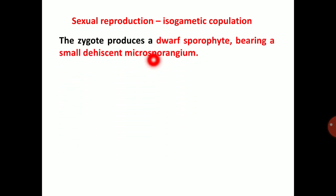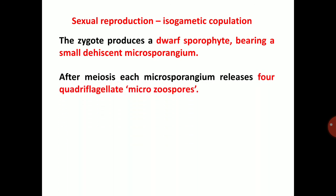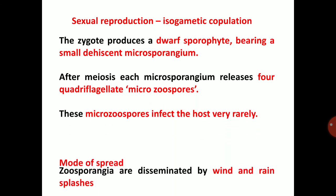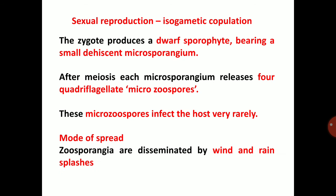The zygote produces a dwarf sporophyte bearing a small deciduous microsporangium. After meiosis, each microsporangium releases four quadriflagellate micro-zoospores. These microspores infect the host very rarely. Mode of spread: zoosporangia are disseminated by wind and rain splashes.